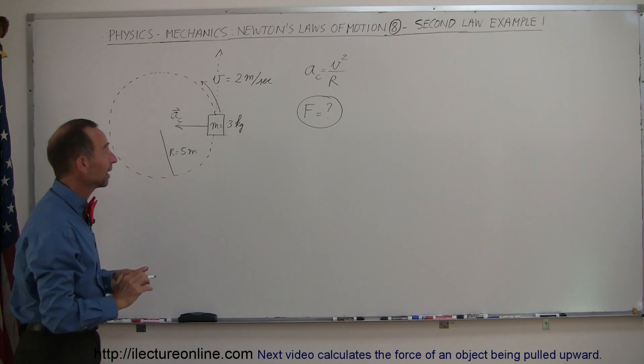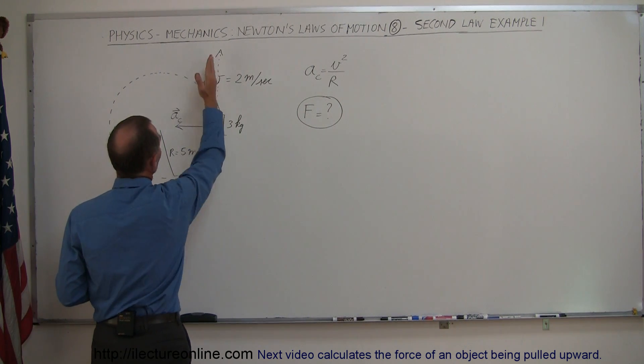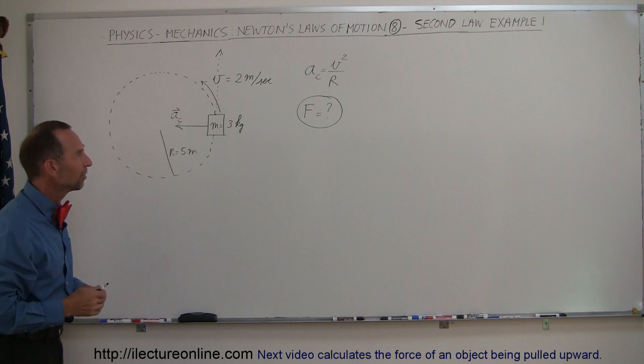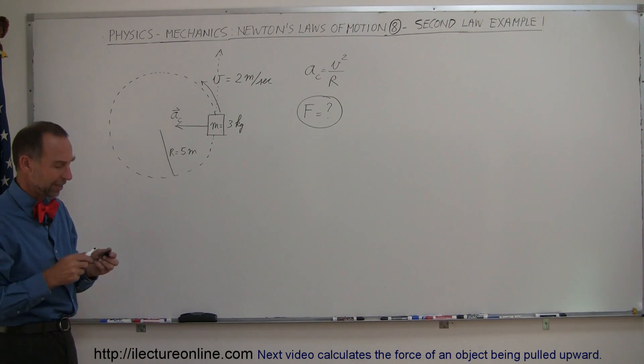Remember, Newton's first law says that if there's no force acting on the object, the object would simply go in a straight-line path at a constant speed forever. And since it's not doing that, it's going in a circular path, there must be some force acting on it.